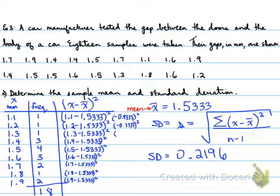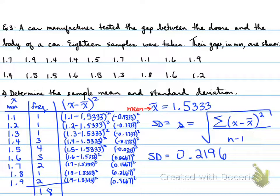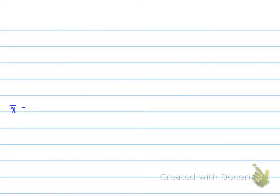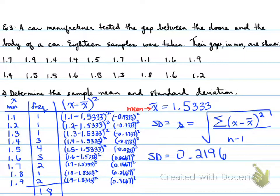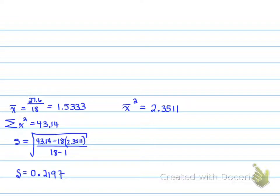If we were to calculate the variance, we would simply square the standard deviation. Using the alternative formula, the standard deviation comes out to 0.2197 — very close to 0.2196 — confirming that both formulas work well with sample data in this case.